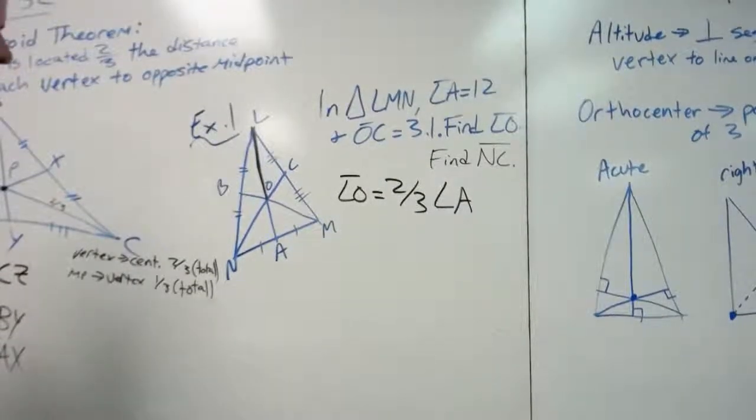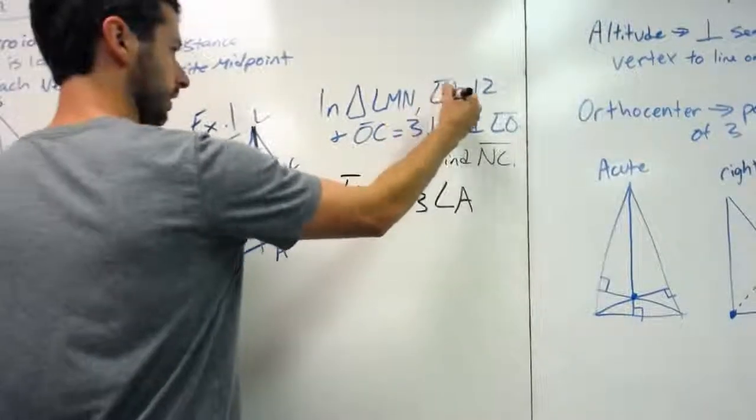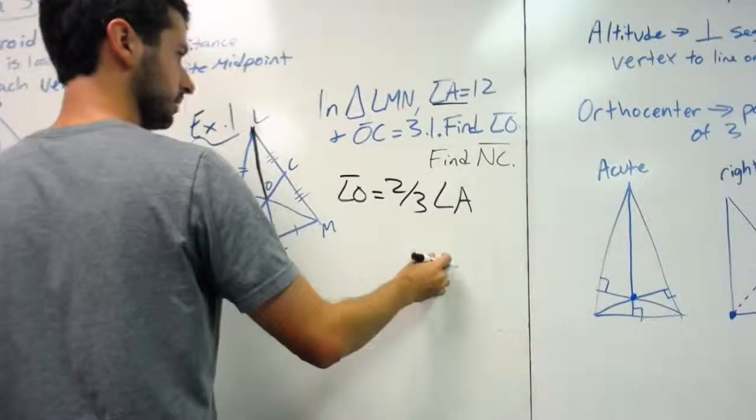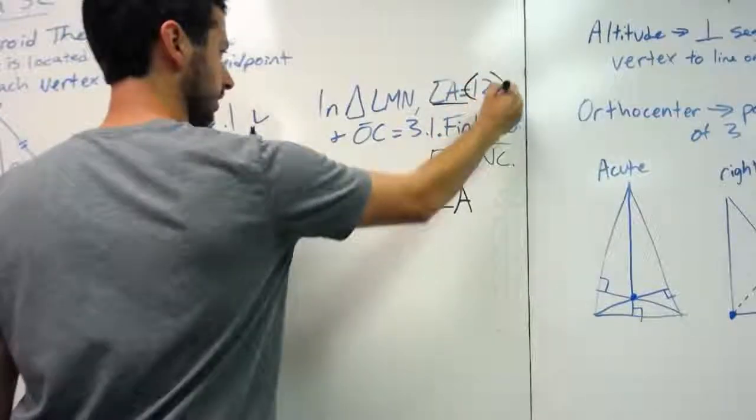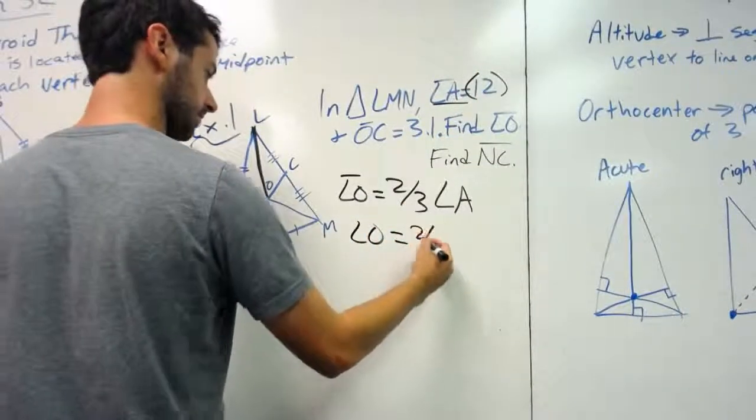Now let's look and see if we have anything we can substitute. Well, we know what LA is. So we can substitute 12 in for LA. Okay, so we do LO equals two-thirds times 12.